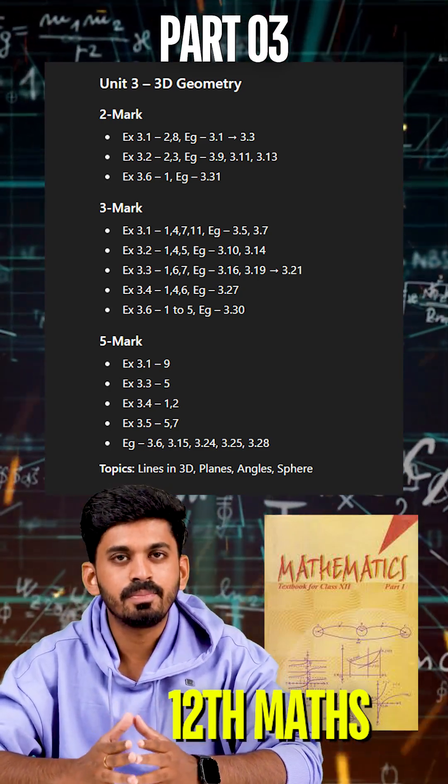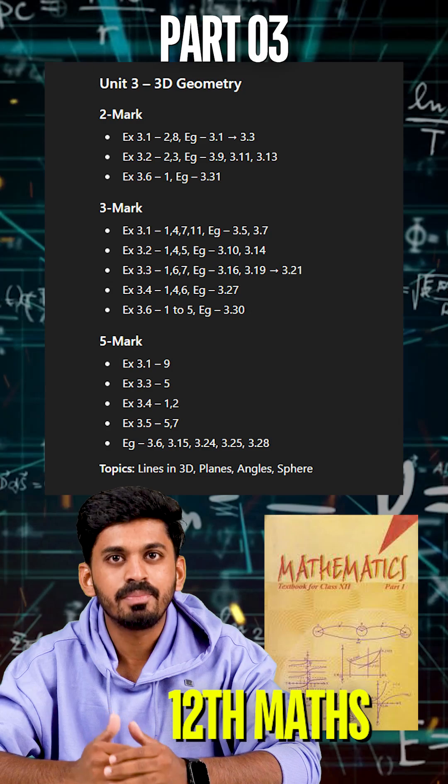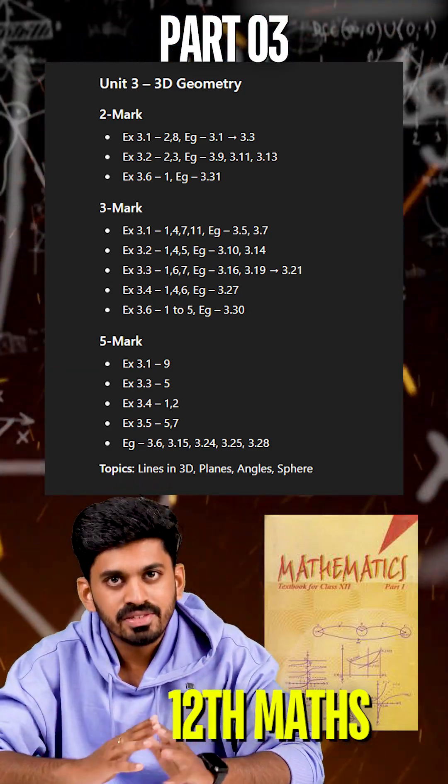XI is 3.2 law, 2, 3. Examples 3.9, 3.11, and 3.13.